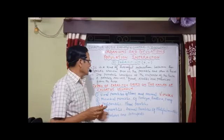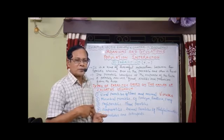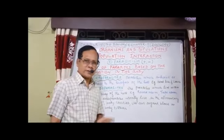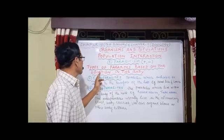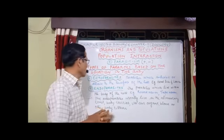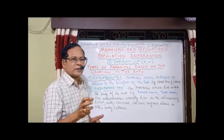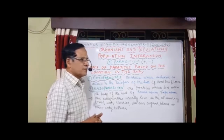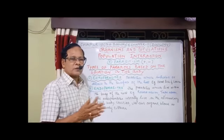That's about the first classification. The second classification is based on the location where the parasite is present — either outside the body of the organism or inside the body. Types of parasites based on location: some parasites inhabit or are attached to the body surface of the host; they are called ectoparasites. For example, head lice, leech — it attaches to the body surface and sucks blood. Even mosquito, the blood-sucking organisms, are all ectoparasites.